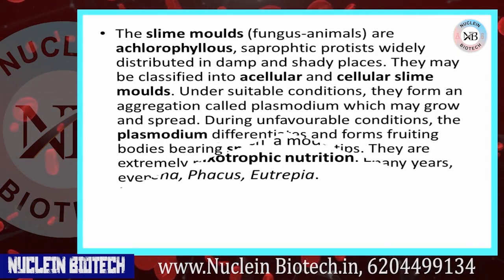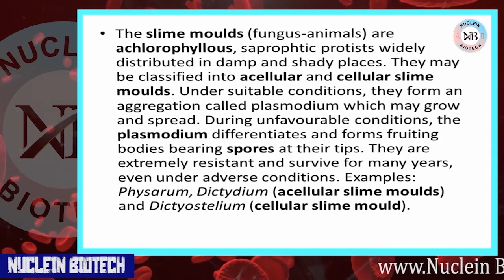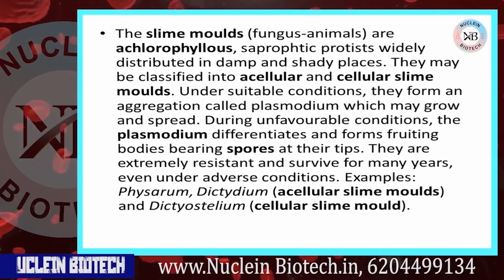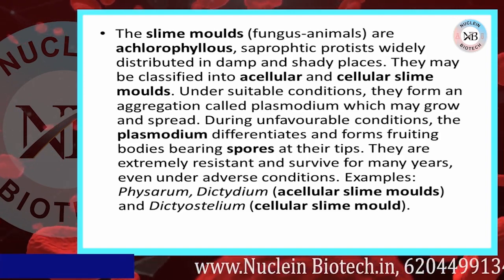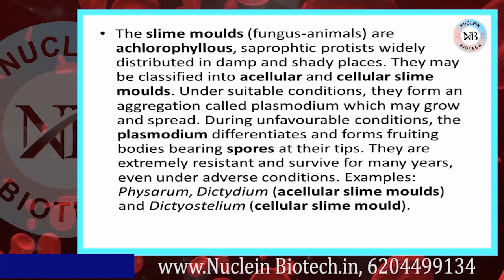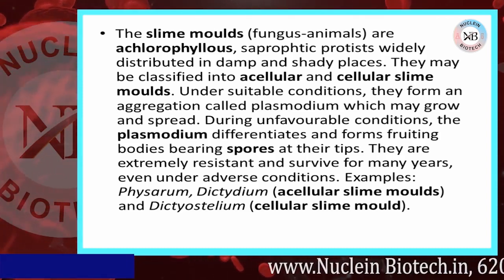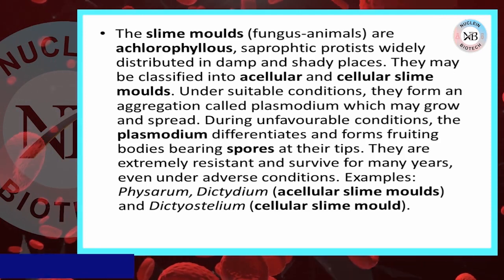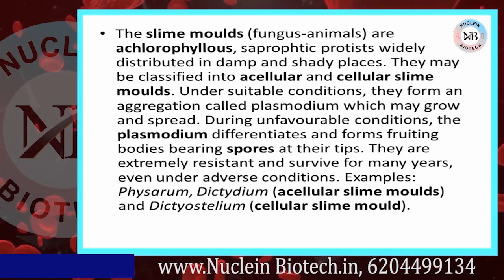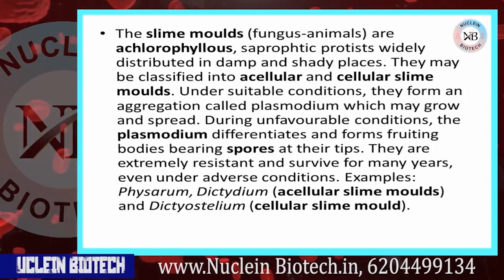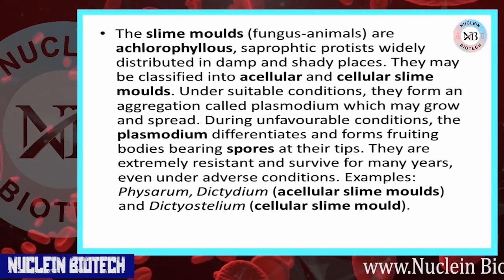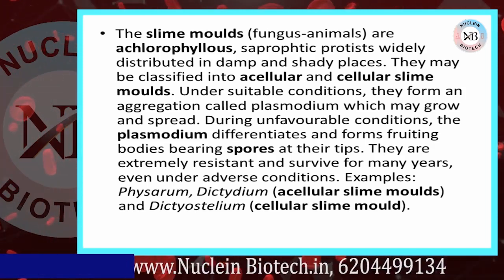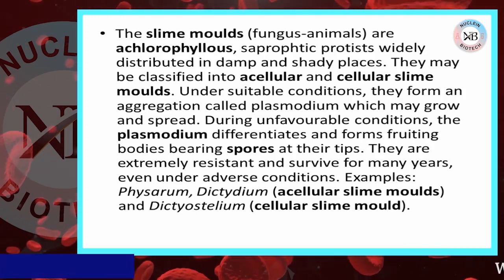Slime molds, or fungus-animals, are achlorophyllous saprophytic protists widely distributed in damp and shady places. They are classified into acellular and cellular slime molds. Under suitable conditions, they form an aggregation called plasmodium. It grows and spreads, but under unfavorable conditions the plasmodium differentiates and forms fruiting bodies bearing spores at their tips. These spores are extremely resistant and can survive for many years even under adverse conditions.